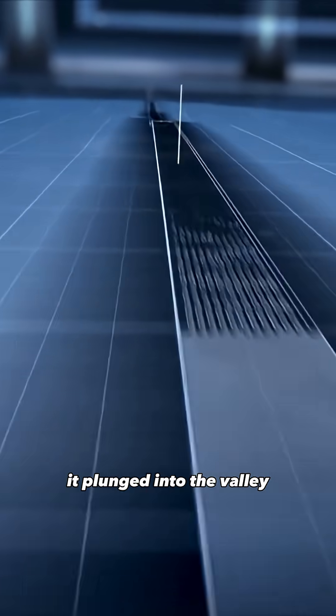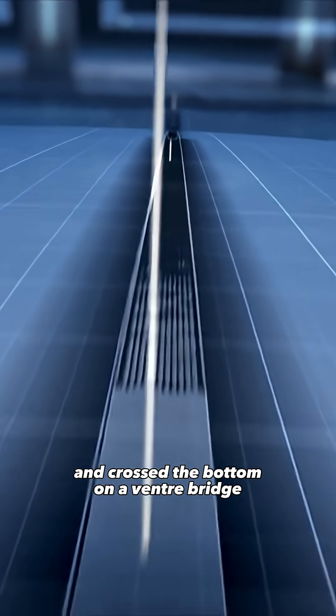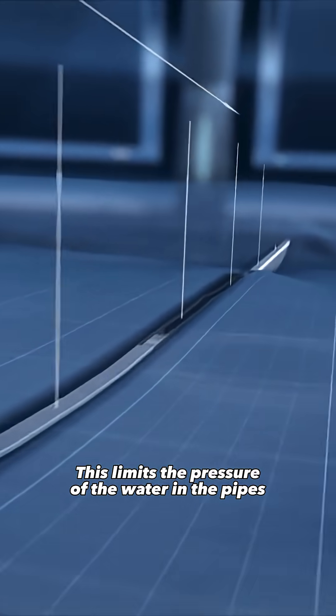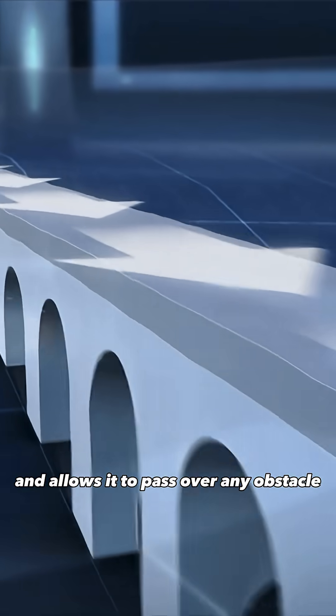From there, it plunged into the valley and crossed the bottom on a vuntre bridge. This limits the pressure of the water in the pipes and allows it to pass over any obstacle.